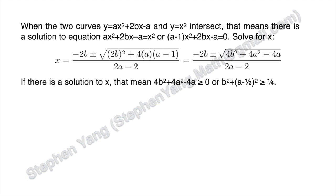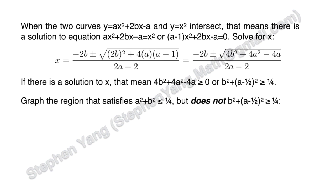If there is a solution for x, the part inside the square root must be non-negative, which means 4b squared plus 4a squared minus 4a is greater than or equal to 0. Or, written in circle form: b squared plus (a minus one half) squared is greater than or equal to one quarter.